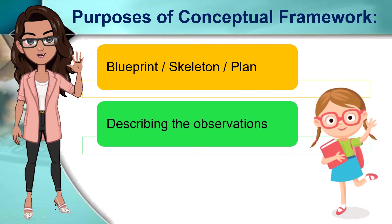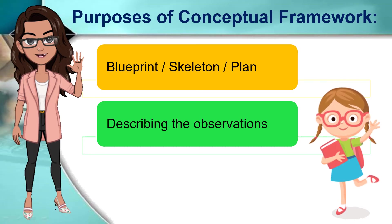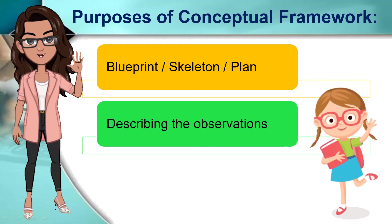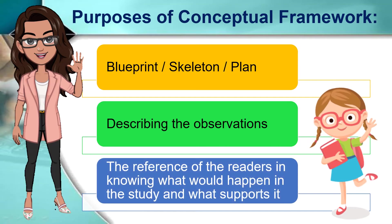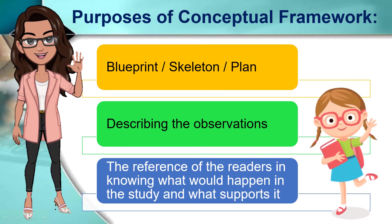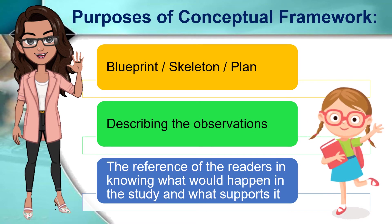Second, you can also include in your conceptual framework, especially in the narrative part, your observations. This refers to the events and situations you have seen while collecting information or sources. Make sure to describe your observations relative to your topic or title. Third, the conceptual framework will help the readers in understanding your studies, especially your reasons in doing it, and the basis, since you are expected to put in some of the sources to support your plan and your whole study.